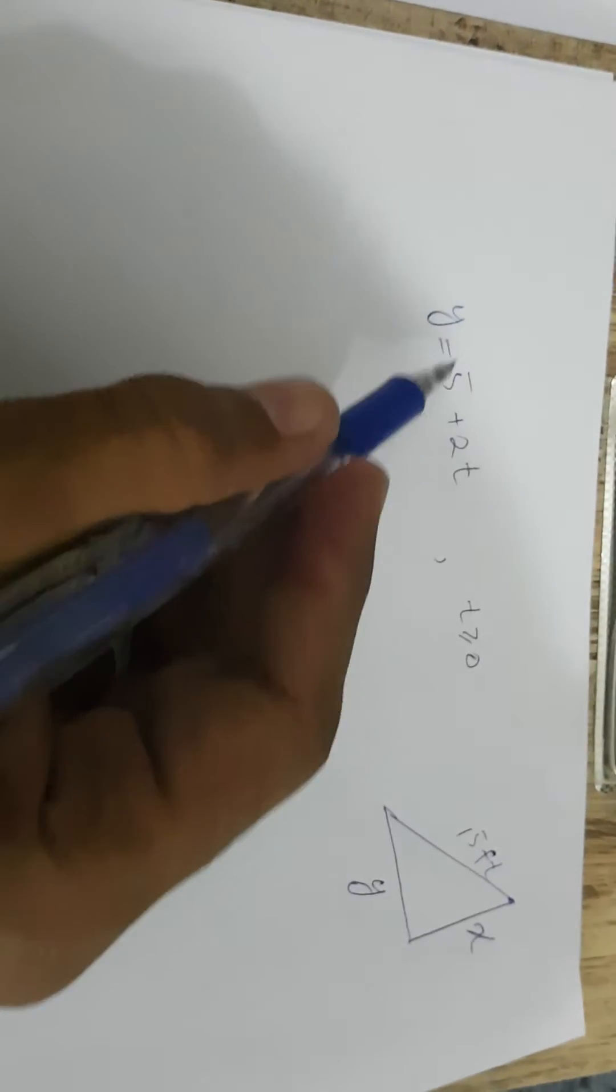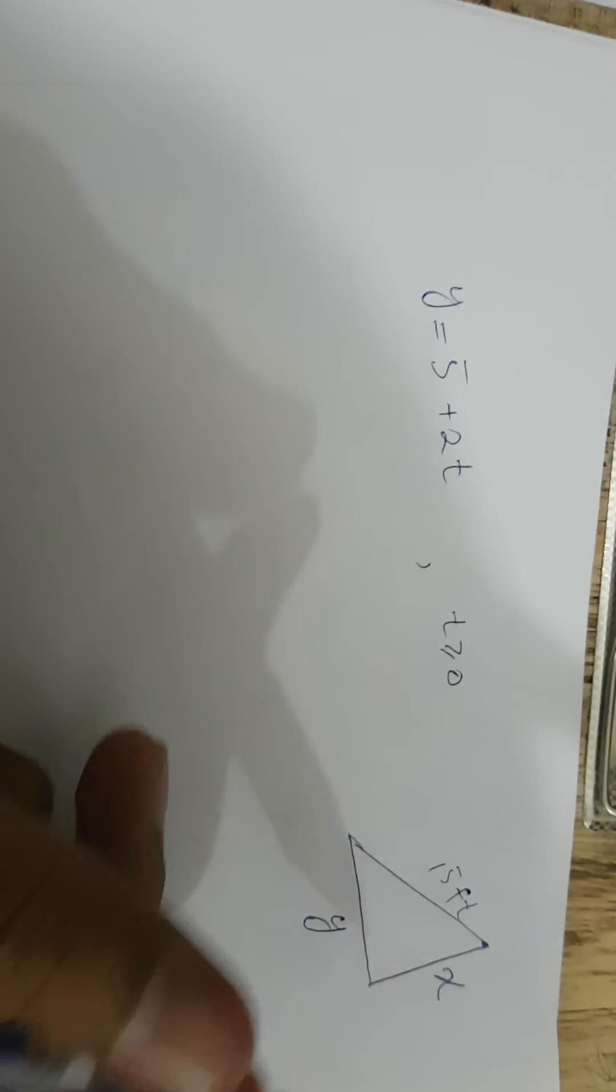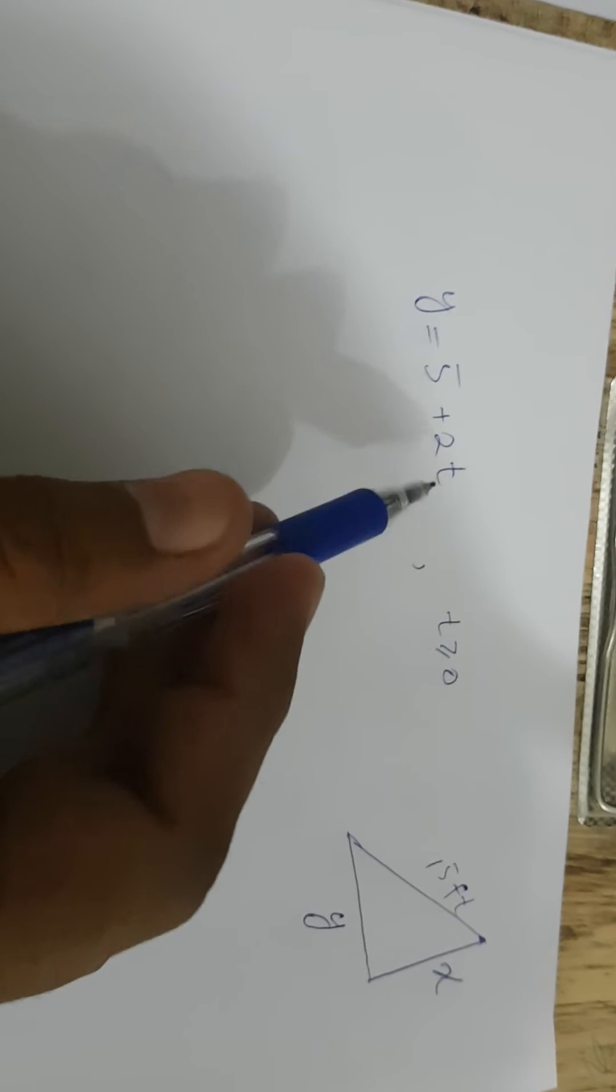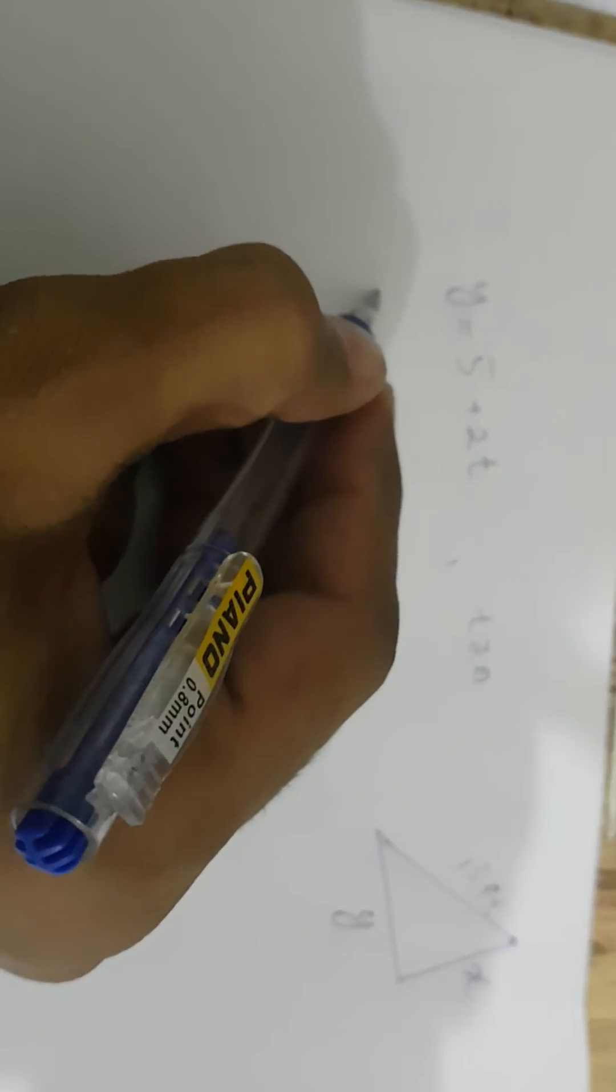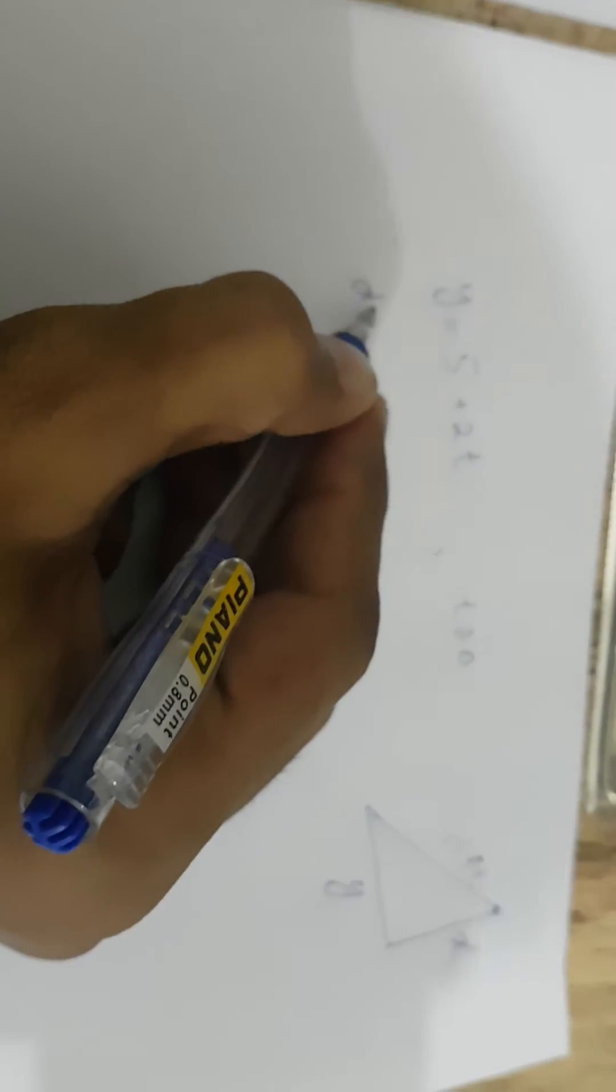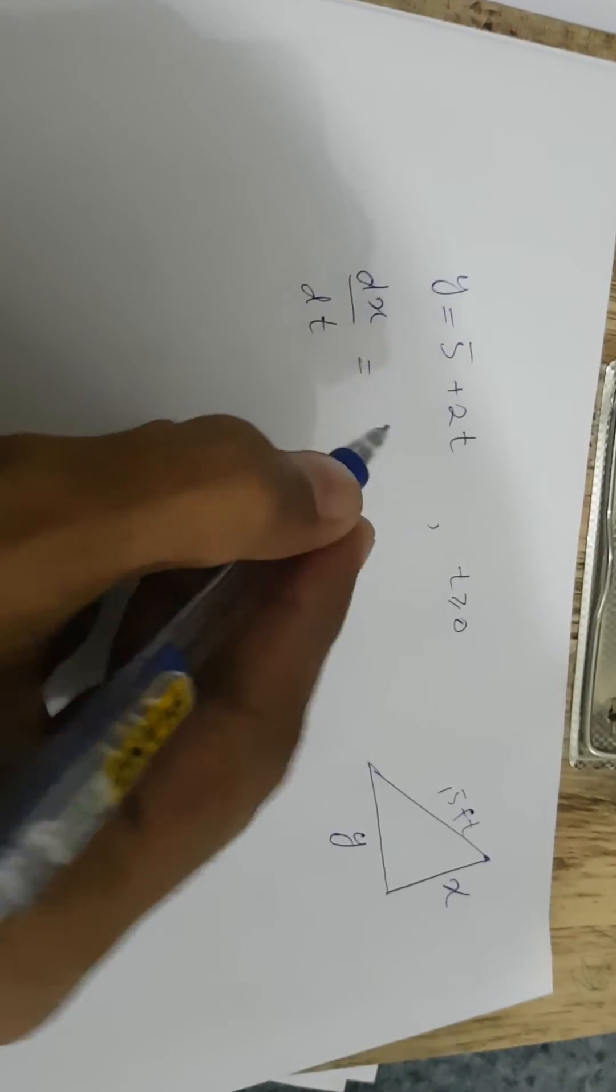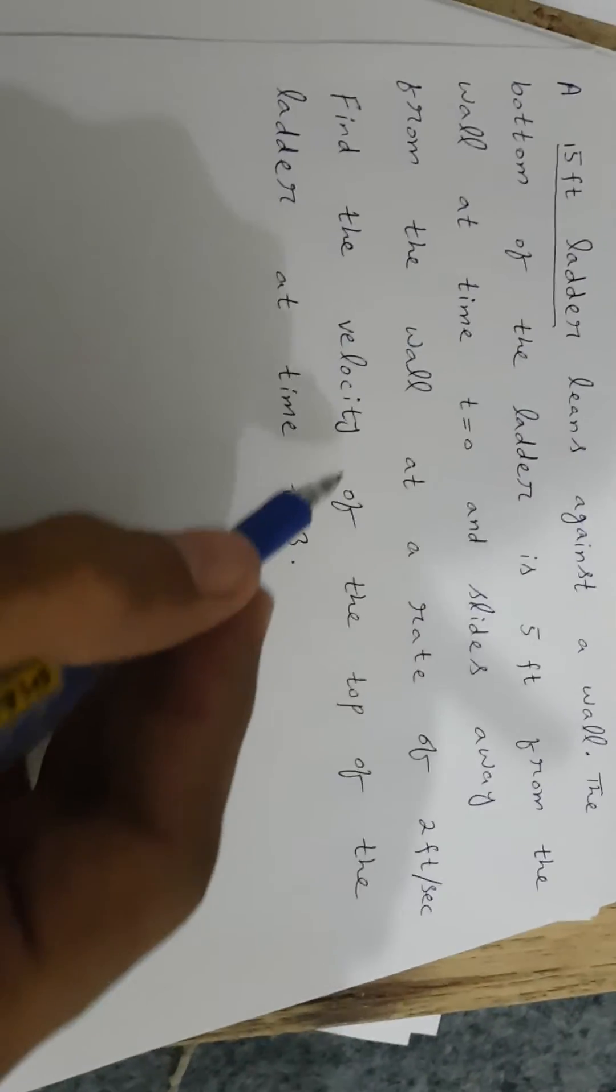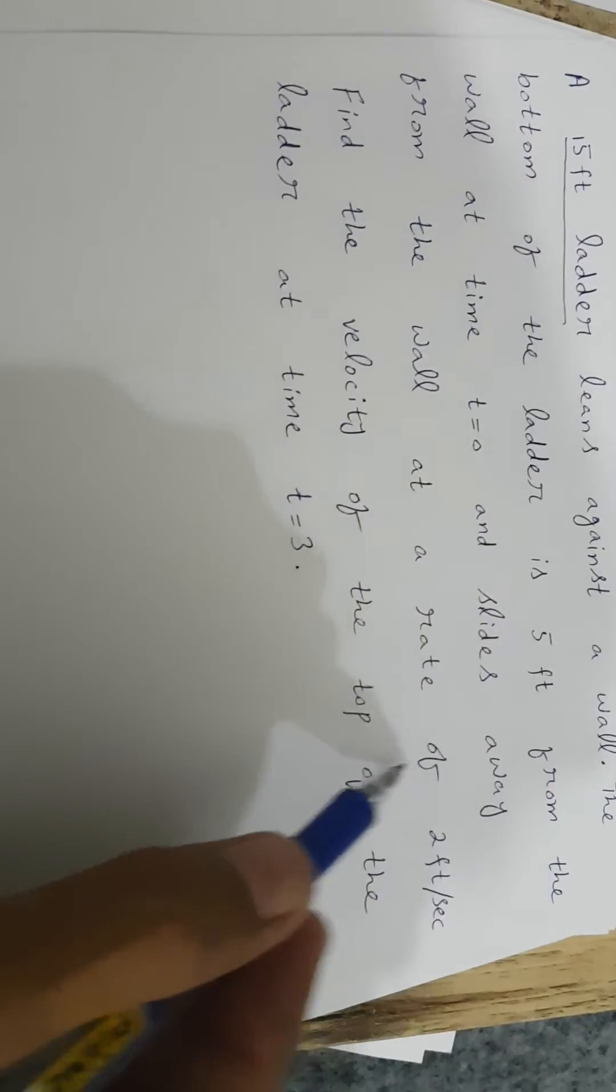At time t equals 0, the bottom of the ladder is 5 feet from the wall, and then it is increasing 2 feet per second. We have to find dx/dt when t equals 3, the velocity of the top of the ladder.